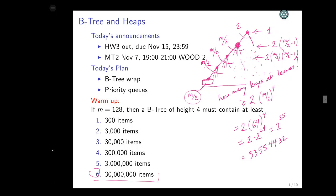Thirty million key-value pairs are in this B-tree of height four, and M is only 128, which is not huge. The point of this exercise is to get you to think about the constraints on B-trees — nodes have to be half full — but also to make you feel that you only have to do four disk accesses to reach one of over 30 million different key-value pairs. That's pretty good. We wanted to reduce the number of disk I/Os, and we did it. CPU time for searching within a node is cheap; disk time is expensive, and we minimize that.